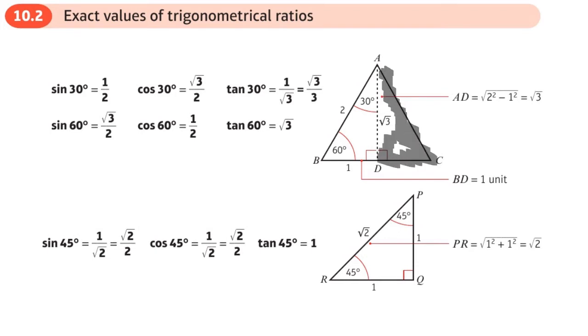What we have is a triangle where we've got 30 degrees at the top and 60 degrees at the bottom. Using Pythagoras we can work out the length of AD as root 3. Now we can then work out the exact values of sine, cos, or tan 30 or sine, cos, or tan 60.